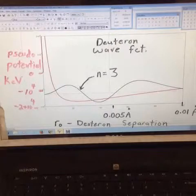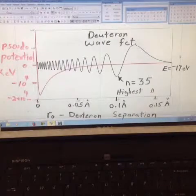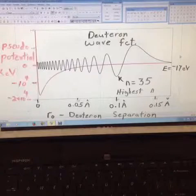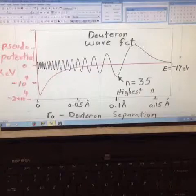I do not want to dwell on these states as they are not relevant. The next slide shows the n equals 35 wave function with the energy of about minus 17 keV. This is the highest energy state available.